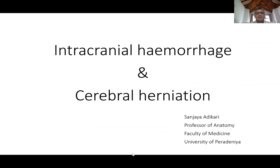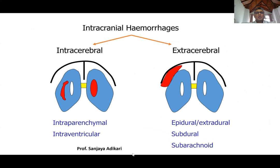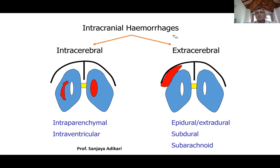Intracranial hemorrhage and cerebral herniation is a related but separate topic. Taking intracranial hemorrhages as the umbrella term, you can divide it into two parts: intracerebral hemorrhages and extracerebral hemorrhages. Intracerebral hemorrhages involve bleeding into the substance of the brain or into the ventricles of the brain.